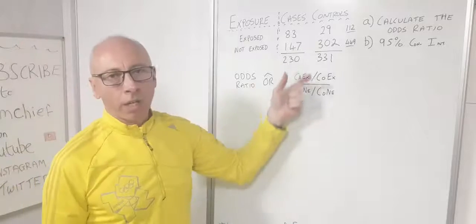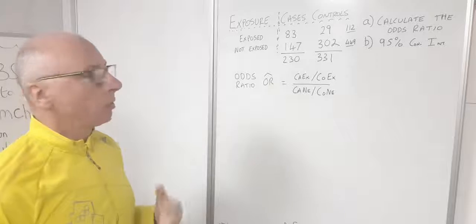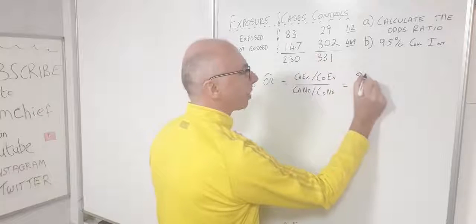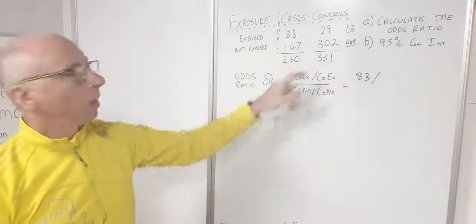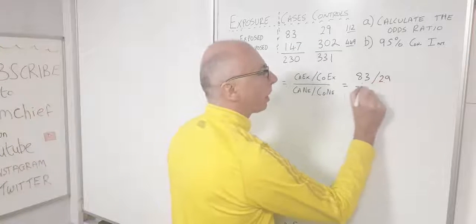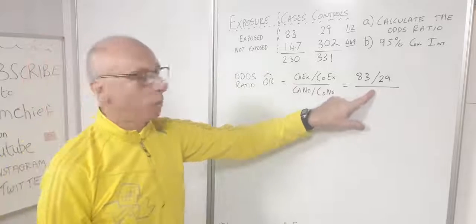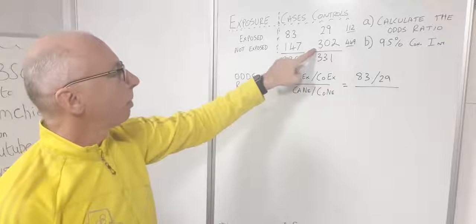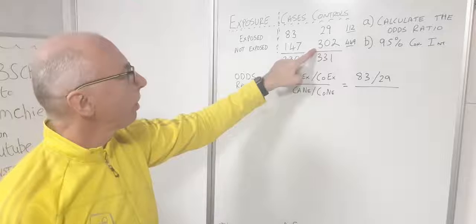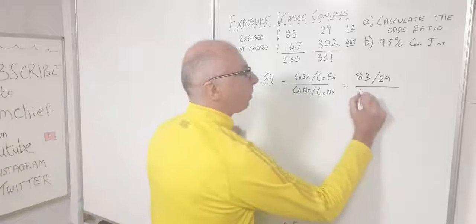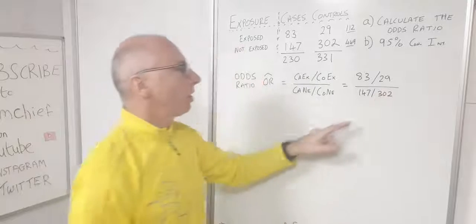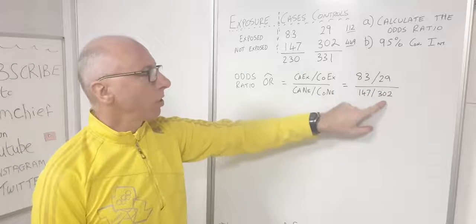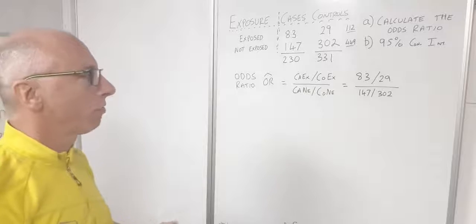Plugging in the numbers: cases exposed is 83, controls exposed is 29, so 83 divided by 29 — just below 3. Then cases not exposed is 147, controls not exposed is 302, so 147 divided by 302 — just under a half. So we're going to end up somewhere near 6 as a rough estimation.